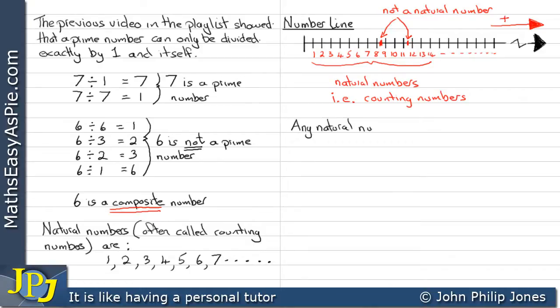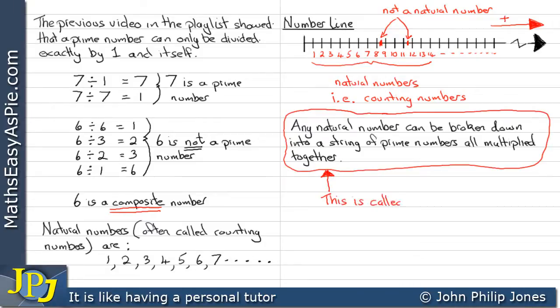Any natural number can be broken down into a string of prime numbers all multiplied together. This is called expressing the number as a product of its prime factors, sometimes also referred to as prime factorization.